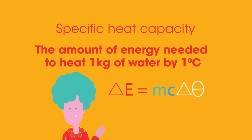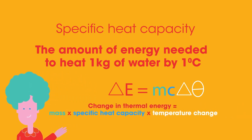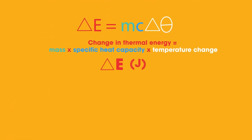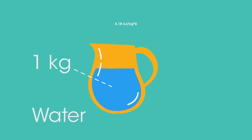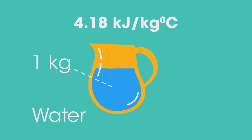The formula is: ΔE = mcΔθ, or change in thermal energy equals mass times specific heat capacity times temperature change. ΔE is measured in joules, m in kilograms, c in joules per kilogram per degree Celsius, and Δθ in degrees Celsius.